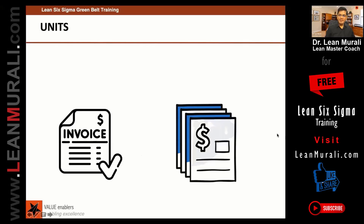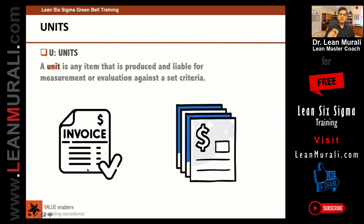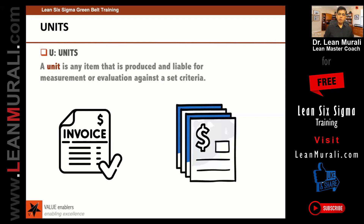Do you all make invoices in your company? How many invoices do we generally make in a month — 20 invoices, 500 invoices? The point is each invoice is a unit. A unit is any item that is produced. An invoice is produced and liable for measurement because we are going to check the invoice for its correctness — measurement or evaluation against a set criteria.